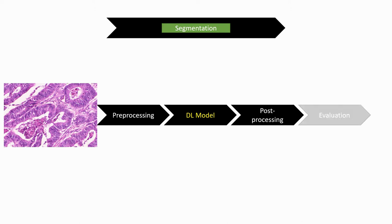There will also be some evaluation at the end of the pipeline. The whole segmentation pipeline can be defined as a mathematical mapping with the segmentation mask y being a function f of the input image x. Each step is also a mathematical function with different kinds of parameters. Pre-processing may depend on thresholds or rescaling parameters. Which pre-processing steps are applied is itself a parameter influencing the overall function. The same is true for post-processing.